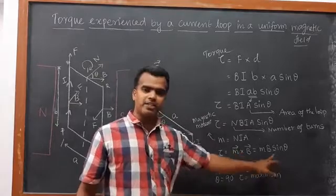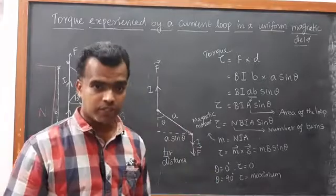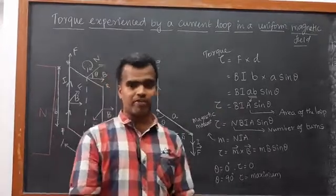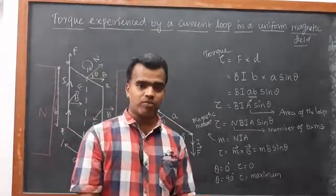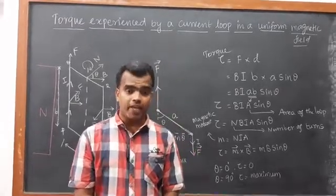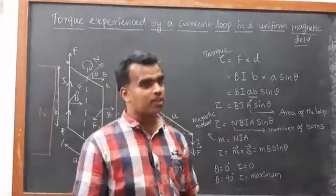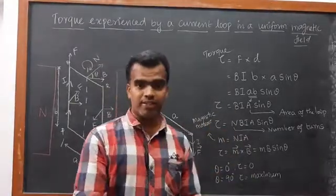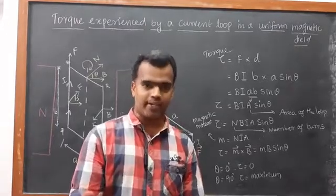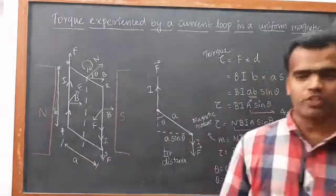Torque becomes minimum when θ = 0°, because sin 0° = 0, so τ = 0. Torque is maximum when θ = 90°, since sin 90° = 1. In a uniform magnetic field, the net magnetic force is zero but the torque may or may not be zero. In a non-uniform magnetic field, the magnetic force is non-zero but the torque can be either zero or non-zero.